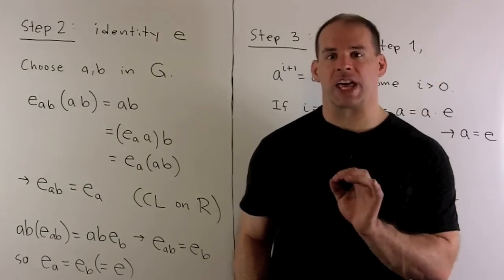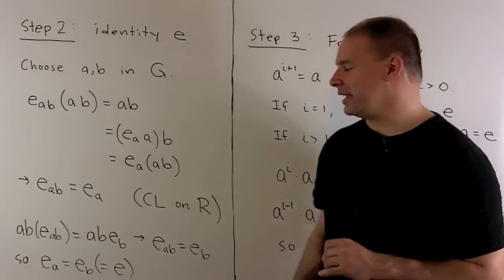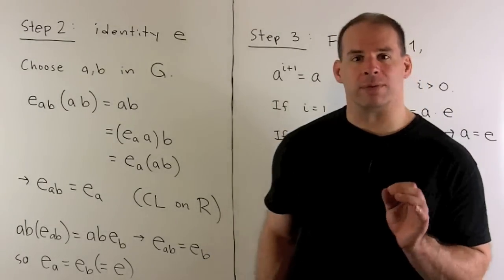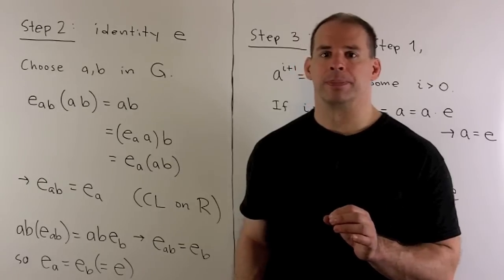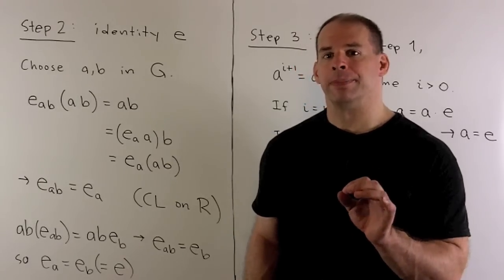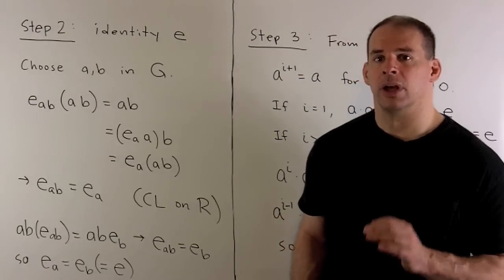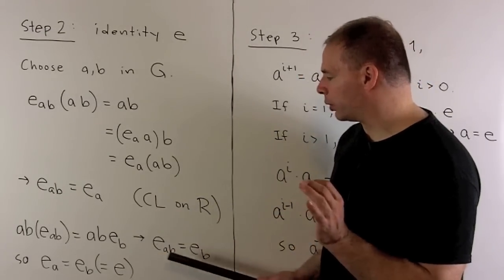We can repeat that procedure on the other side. We replace E sub A with E sub B. That'll get us that E sub AB is equal to E sub B. So, we have for all A and B, E sub A is equal to E sub B. I call that element E, the identity for G itself. Note, I've had to use both cancellation laws in our proof.